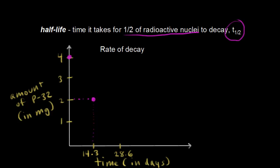After 28.6 days, that's another half-life. What's half of two? It's one. So that's our next point. After 28.6 days, we should have one milligram of our sample.